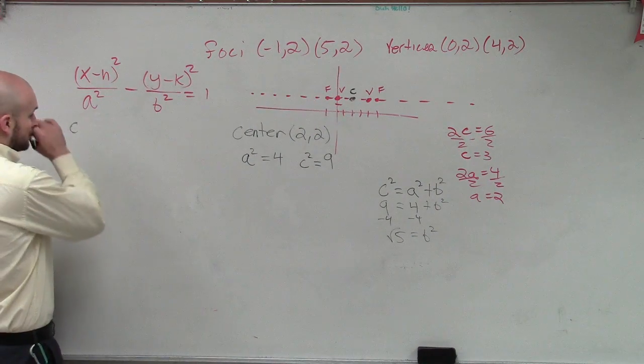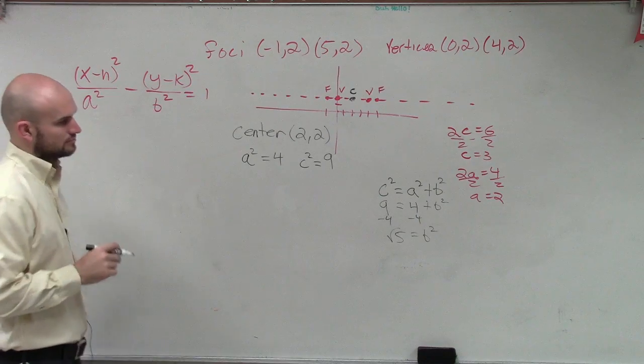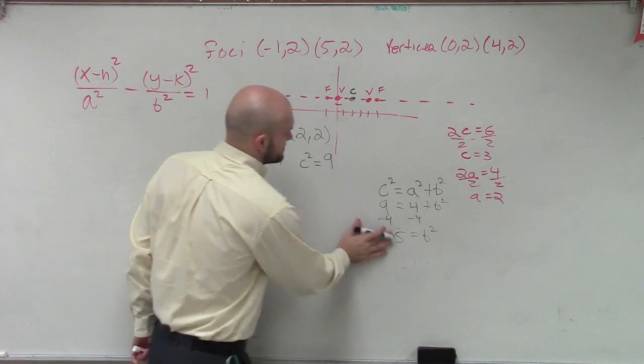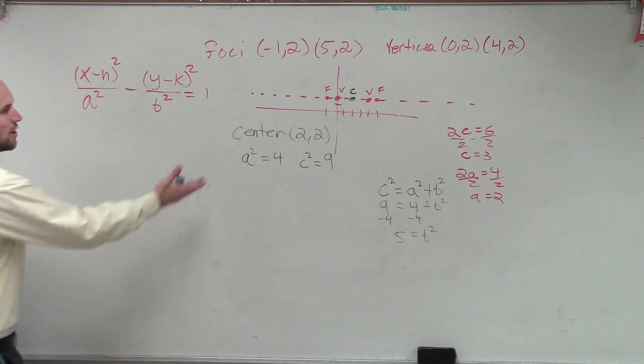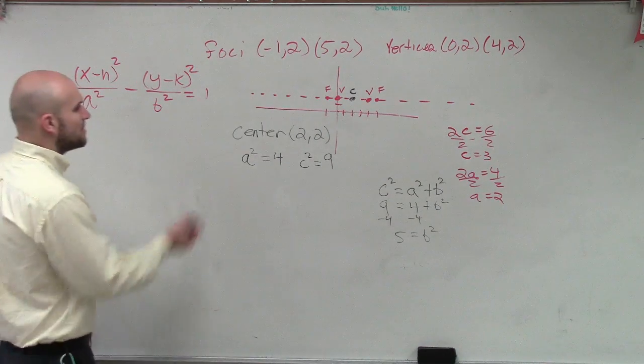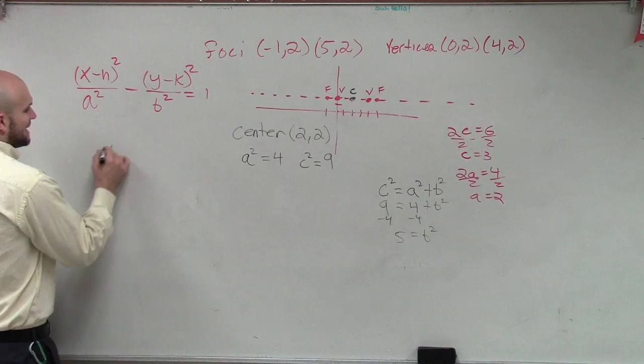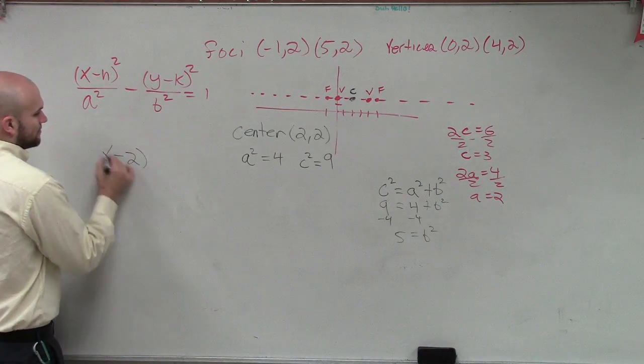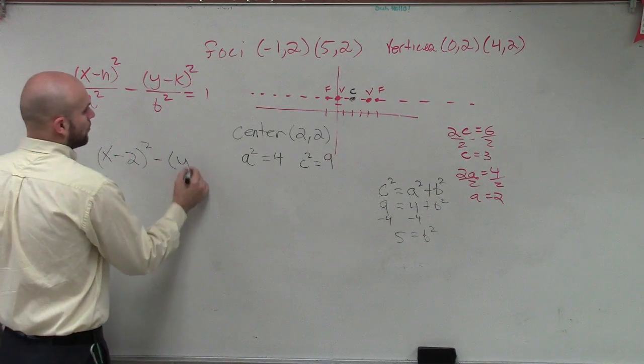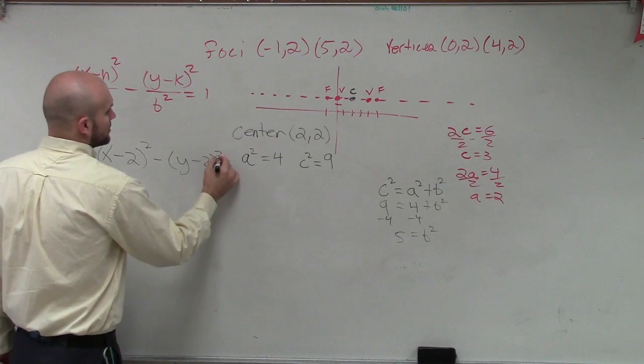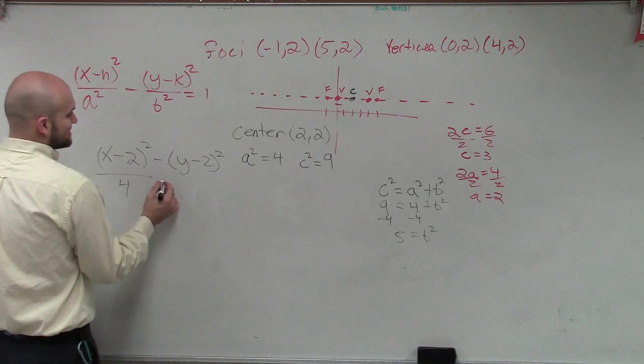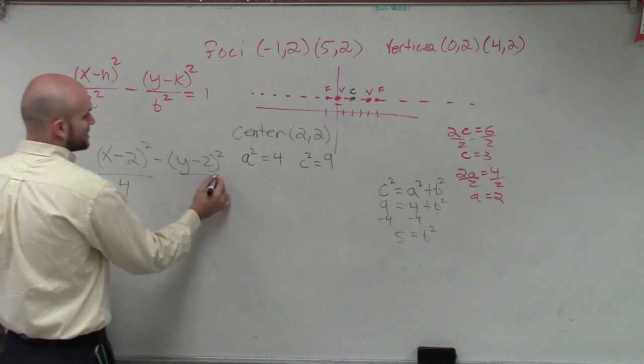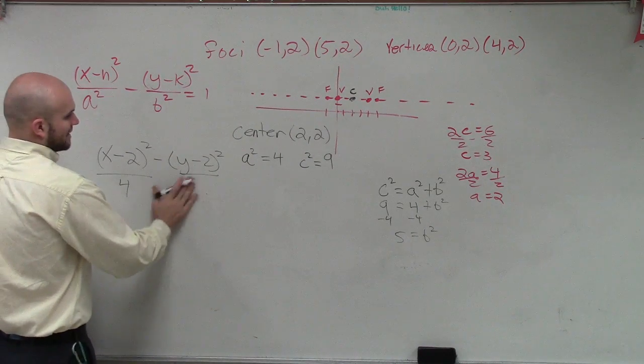So, therefore. Isn't it just the square root of... Oh, sorry. Five. Sorry. Thank you. I'll just go to the next step. So, now, just to find my standard form, I plug in my center, which will be (x - 2)² minus (y - 2)² divided by a², which is 4, minus b², which is not 9. Five.